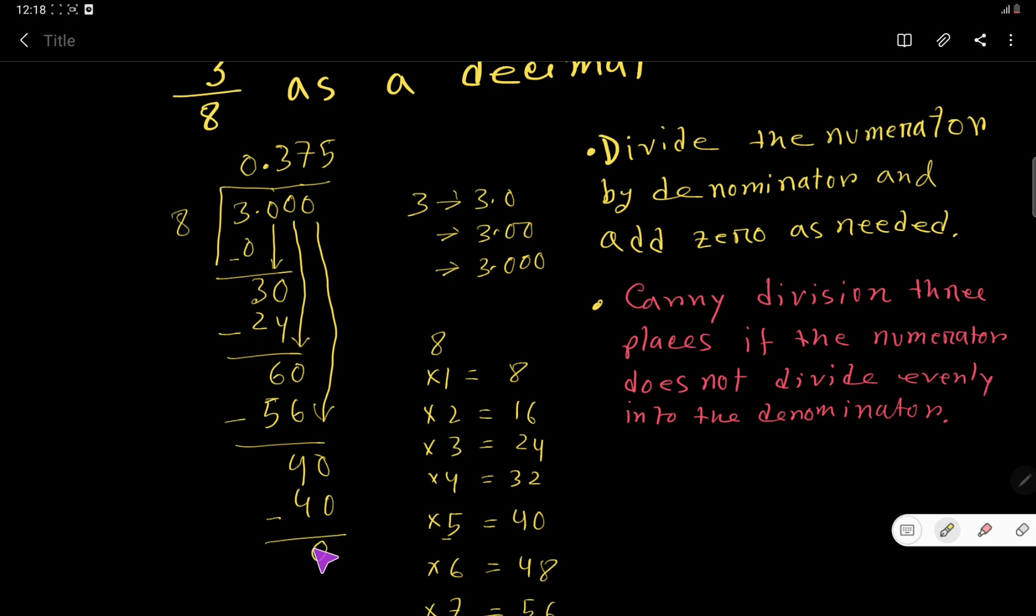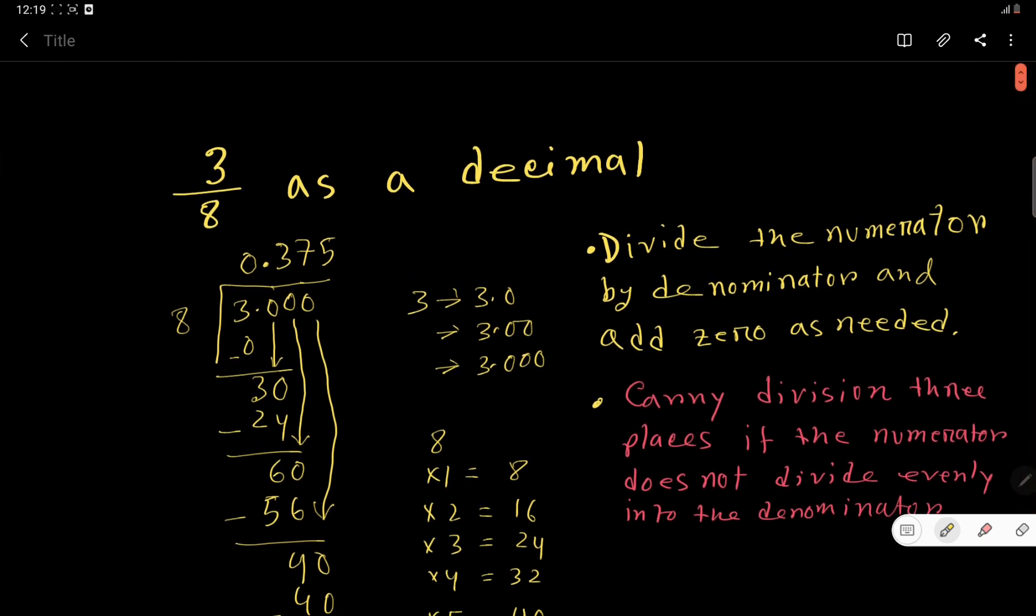When the subtraction is 0, you stop. If the process continues, follow this rule: carry division up to 3 places if the numerator does not divide evenly into the denominator. So this is the answer: if you express 3 over 8 as a decimal, you get 0.375.